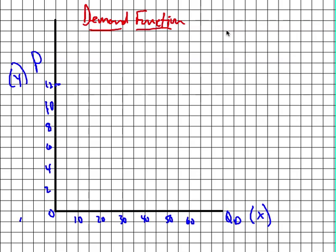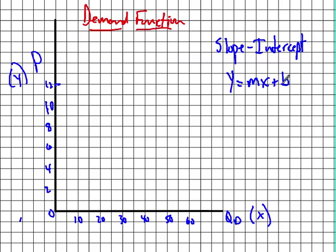Before we start, I want to go over a quick refresher on how to draw a line. A lot of you remember this as the slope-intercept formula, which you can probably rattle off. Slope-intercept is y equals mx plus b, where m is the slope and b is the y-intercept.